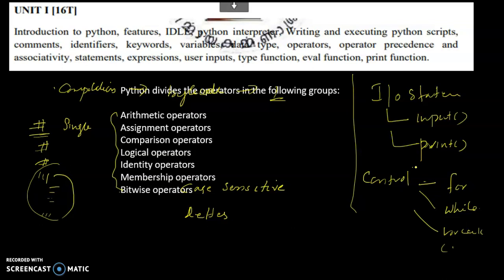What is the iteration statement? We use control statements. We can add statements, then input-output operations. In a statement, a valid instruction is called a statement in Python. The keyword becomes part of the statement and functions are part of it too.